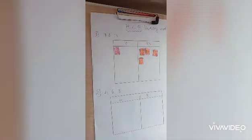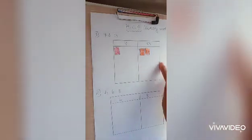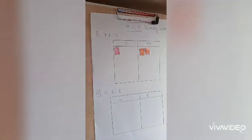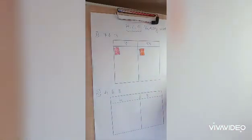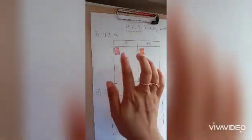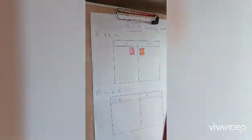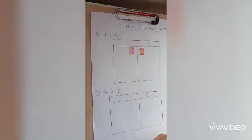Between one and four, one is smaller — remove it from the bigger number. Between one and three, again one is smaller — remove it. Between one and two, one is smaller — remove it. Now I am left with one and one on both sides. So the HCF of seven and thirteen is one.